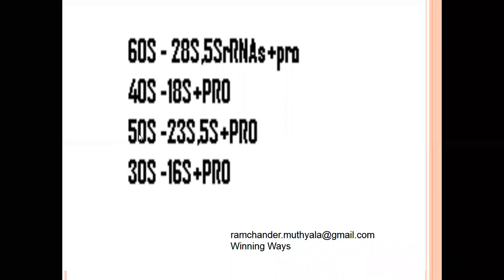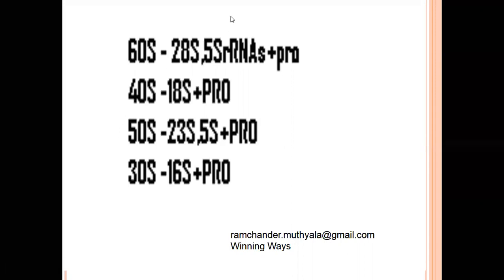The 50S large subunit of prokaryotes contains an A-site, which mainly helps in receiving amino acids, and a P-site, which mainly helps in the formation of polypeptide bonds between the two amino acids. The small subunit is 30S, built by 16S rRNA and protein particles. During translation in prokaryotes, the 50S and 30S subunits come together to form the 70S ribosomal complex in the cytoplasm.